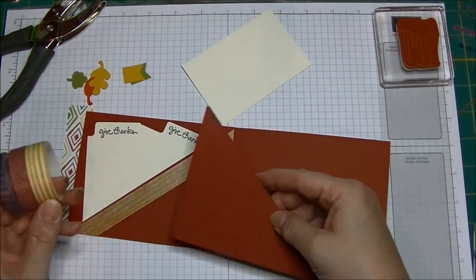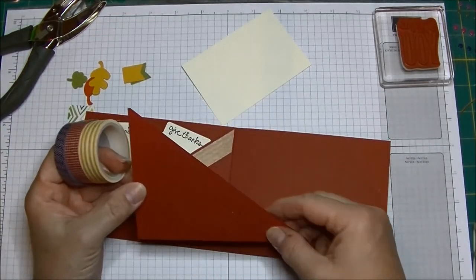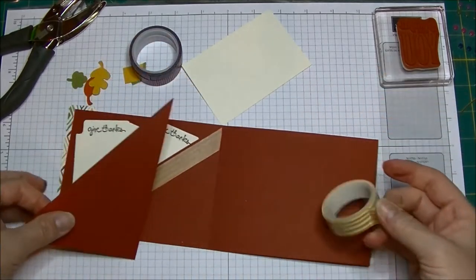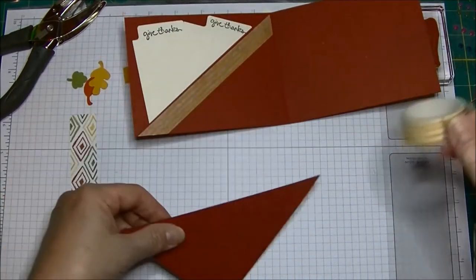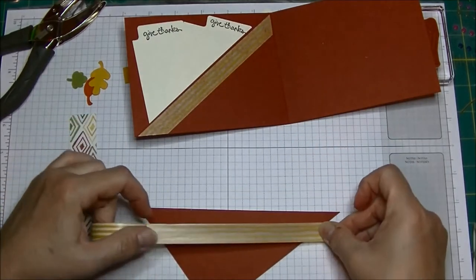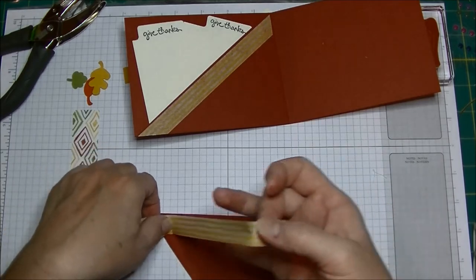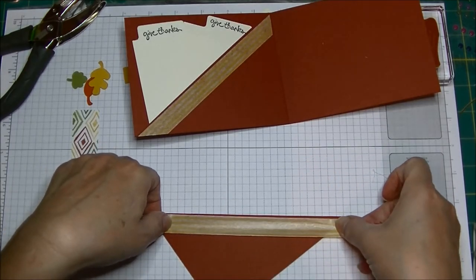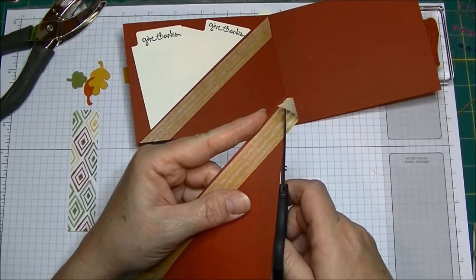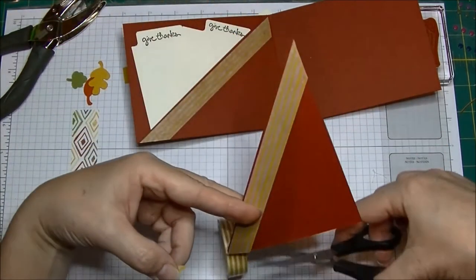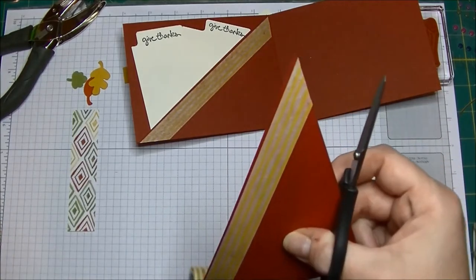To decorate my pocket, I took the long side and I just used a piece of washi tape. This is the Color Me Autumn washi tape, and this cardstock, in case I didn't say it, is Cajun Craze. I just kind of lined it along the edge like this and cut off the extra.